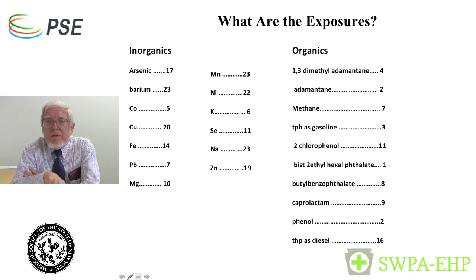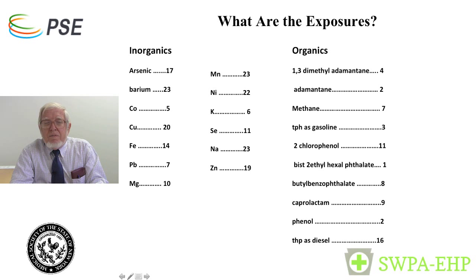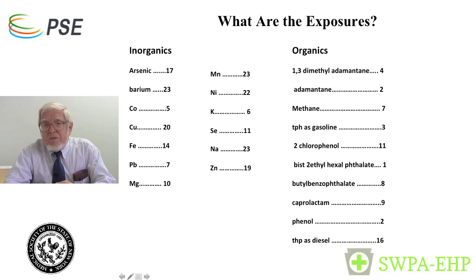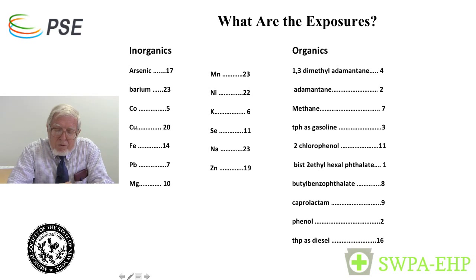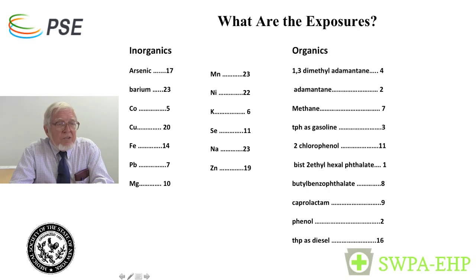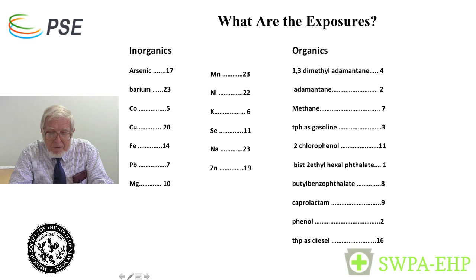Looking at the Marcellus shale exposures at one site in Southwest Pennsylvania, we found a range of metals in drinking water: arsenic, barium, cobalt, copper, iron, lead, manganese, magnesium, nickel, selenium, potassium, sodium, zinc, and radium.